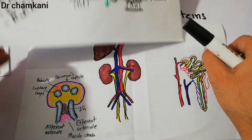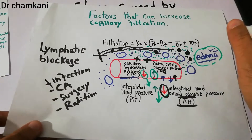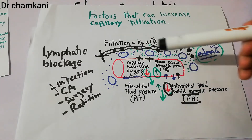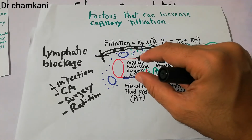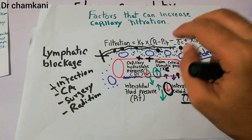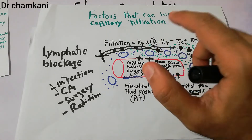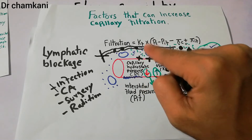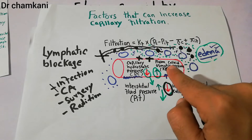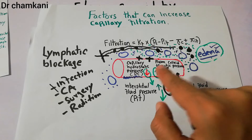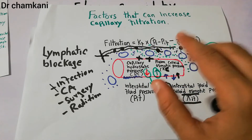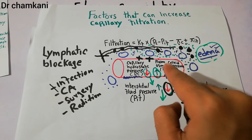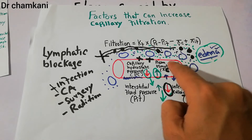How decreased plasma proteins lead to edema relates to what we discussed previously: there are four main forces at the level of capillaries which play their role in preventing or causing edema. The capillary hydrostatic pressure tries to push fluid outside, while the plasma colloid osmotic pressure tries to pull fluid in. The plasma colloid osmotic pressure is due to proteins inside the plasma.